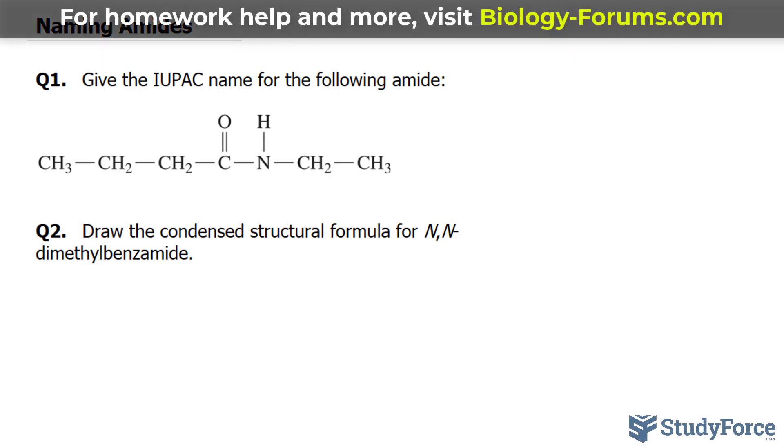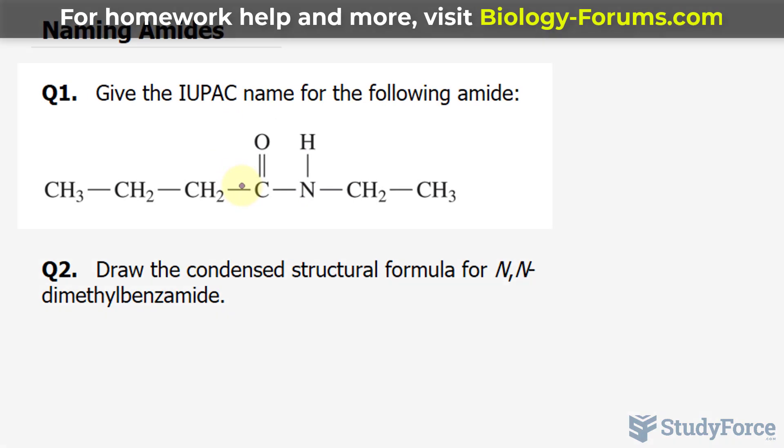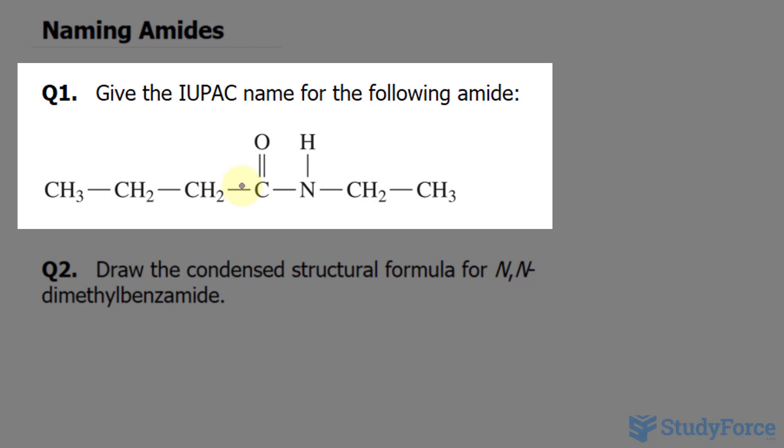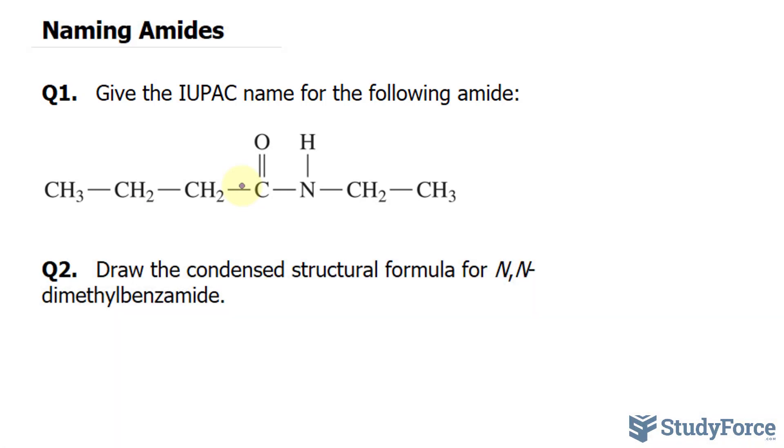And before we begin answering this question, we can see that in this molecule right here. The question reads, give the IUPAC name for the following amide. So amides are formed when you have a nitrogen-containing compound coming together with a carboxylic acid.